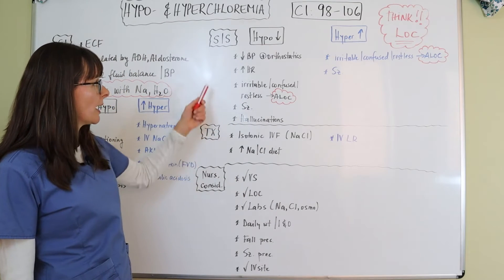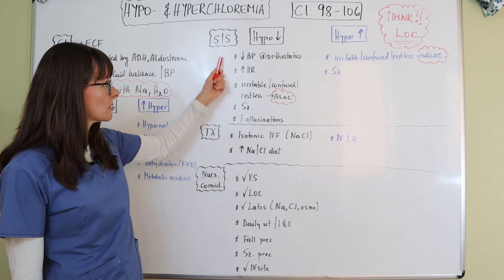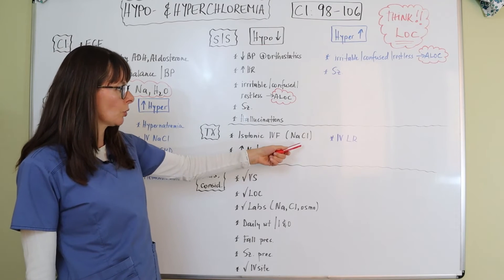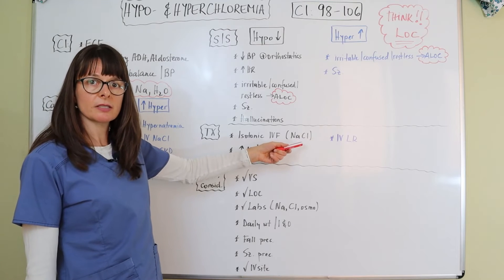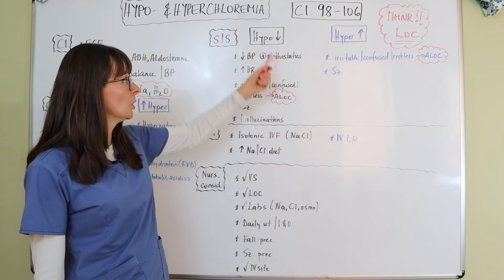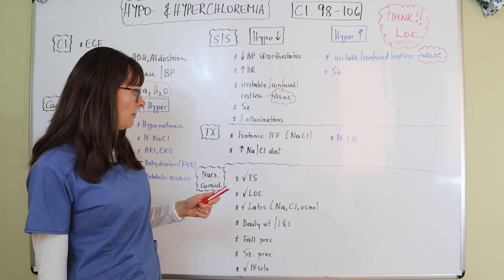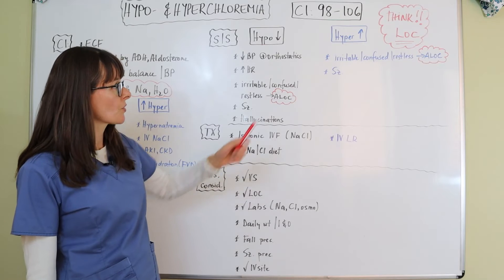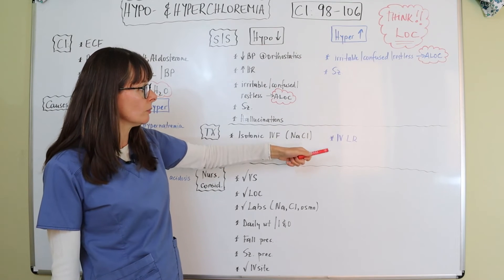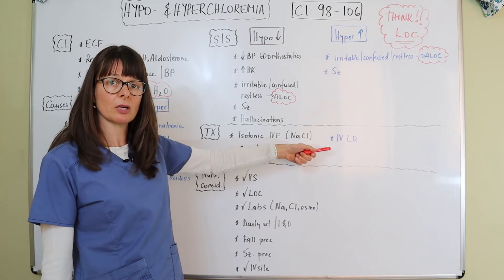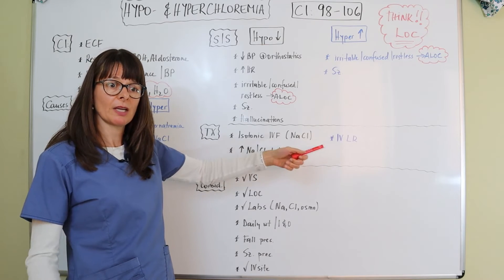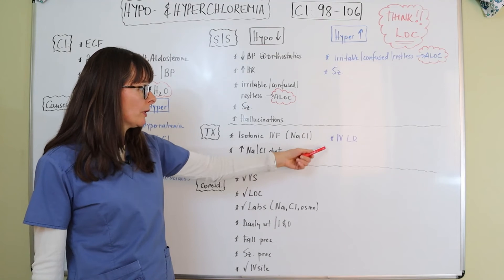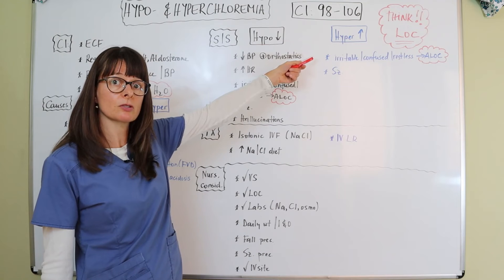Treatment for hypochloremia is isotonic IV fluids because typically we've lost some fluids and have signs of fluid volume deficit. Sodium chloride or normal saline contains 0.9% sodium chloride, so if we replenish it, we'll get the chloride level back up. A high sodium and chloride diet will also help to elevate those levels. For hyperchloremia, we still want to give isotonic IV fluids because most likely the electrolytes are more concentrated due to fluid volume deficit — hemoconcentration — but we don't want to give sodium chloride because the chloride level is already high.